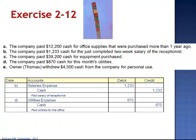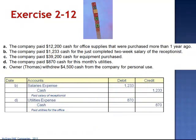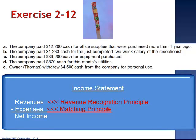Since we've already talked about the Revenue Recognition Principle, it's time to look at something called the Matching Principle. The Matching Principle governs the timing of expenses. Expenses are recorded in the same time period as the revenues they help generate. Both the salaries and the utilities are necessary expenses to generate the current period's revenues. The Revenue Recognition Principle governs the top portion of our income statement — the revenues — and the Matching Principle governs the bottom portion — the expenses.